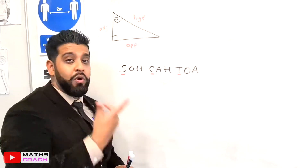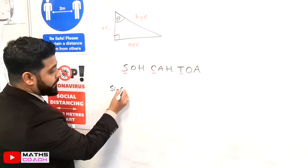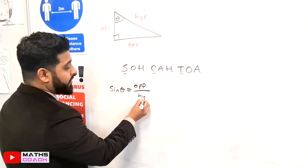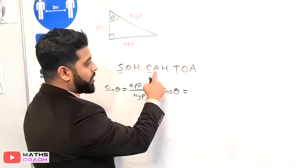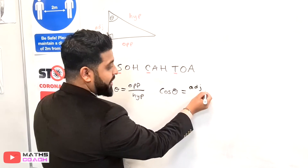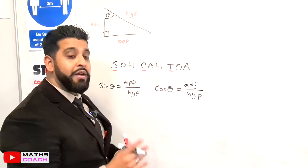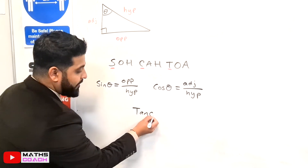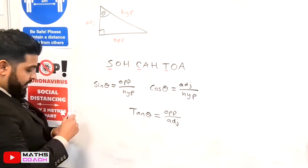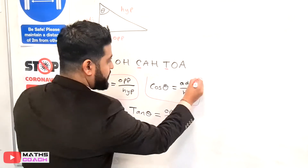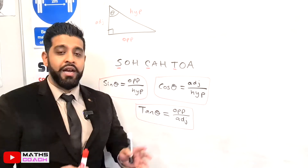From SOH CAH TOA you can derive the formulas you need. For SOH: sine θ equals opposite over hypotenuse. For CAH: cos θ equals adjacent over hypotenuse. For TOA: tan θ equals opposite over adjacent. These are the three trigonometric ratios that you will need to know in order to answer any questions involving a right angle triangle where you know sides and angles.